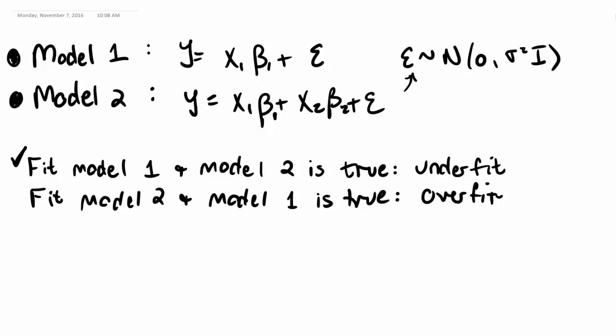So let's go through some results from model underfitting. So our beta 1 hat in this case is equal to x1 transpose x1 inverse x1 transpose y, of course.